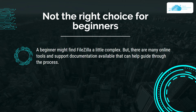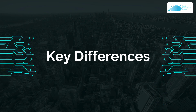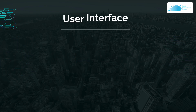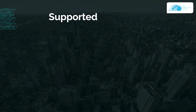Now let's talk about the key differences between WinSCP versus FileZilla. Starting with user interface: WinSCP has both a graphical user interface and a command line interface, making it easy for operators to configure WinSCP, transfer files, and perform batch file scripting. FileZilla only has a graphical user interface and does not support CLI, giving it limited access to configuring FTP requirements. Comparing both on GUI and CLI, WinSCP scores higher.